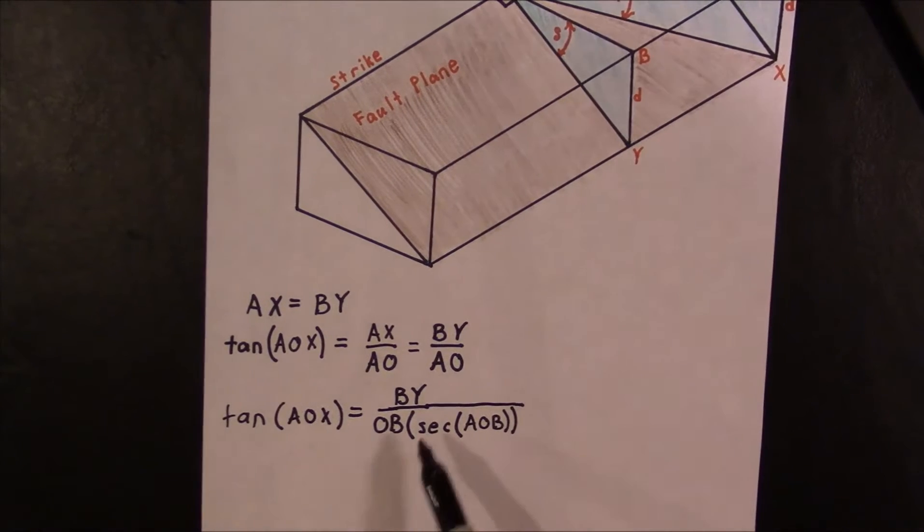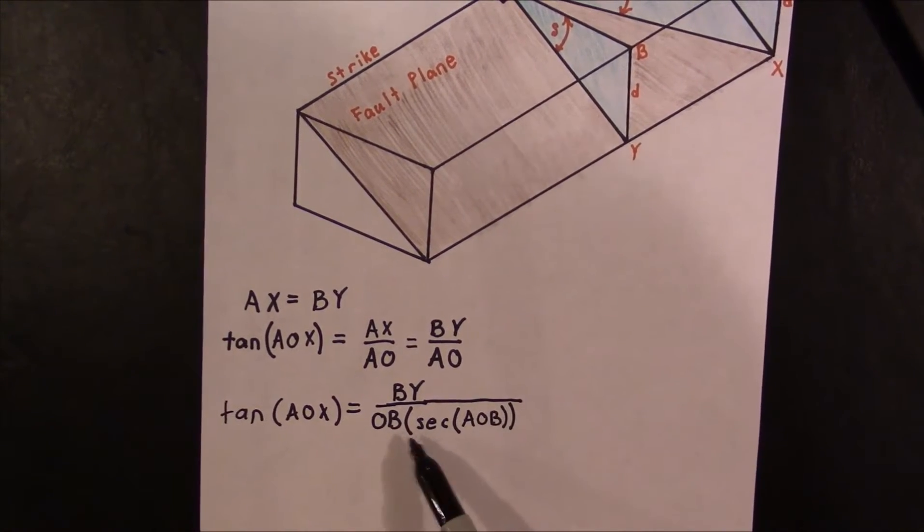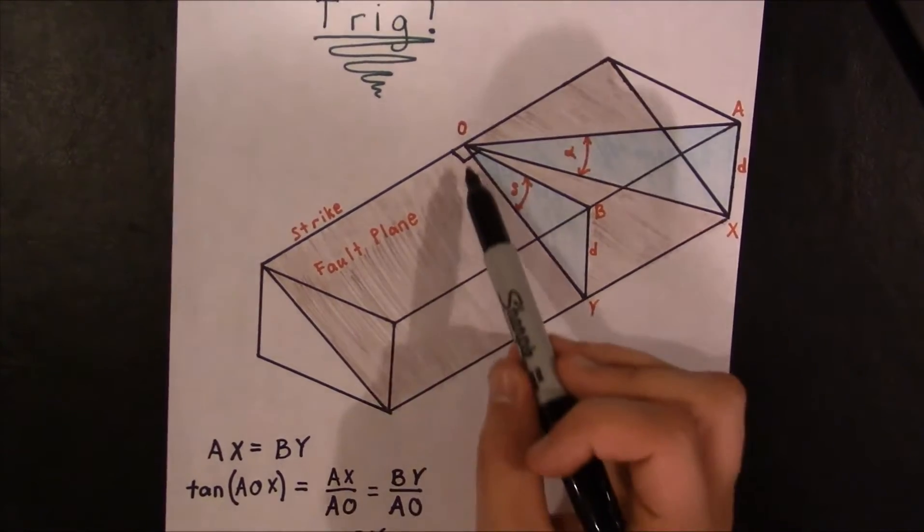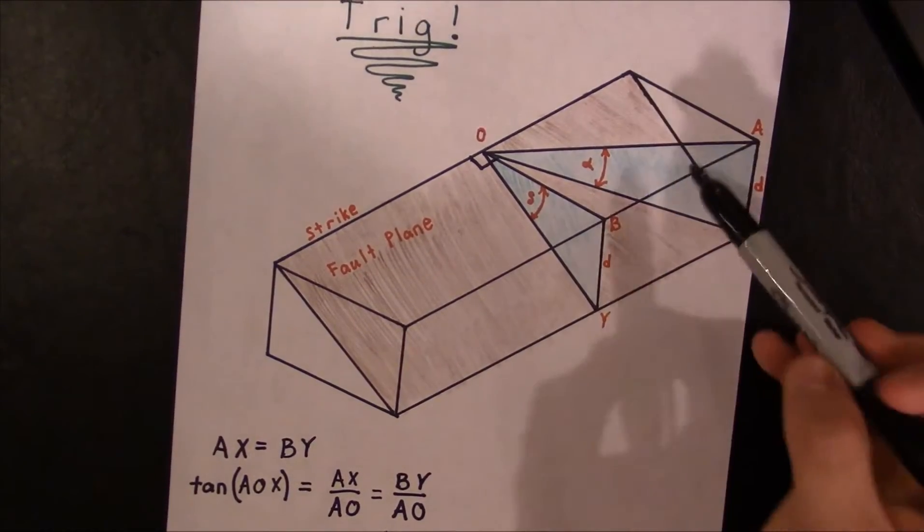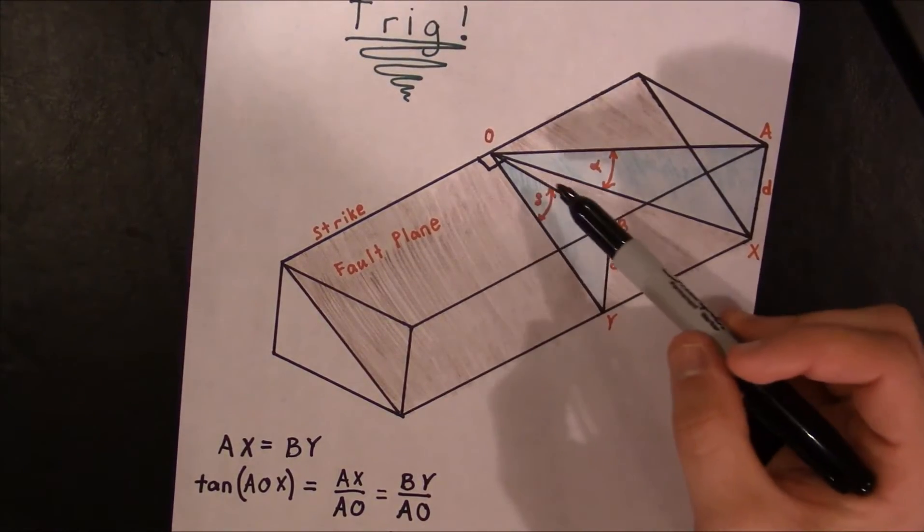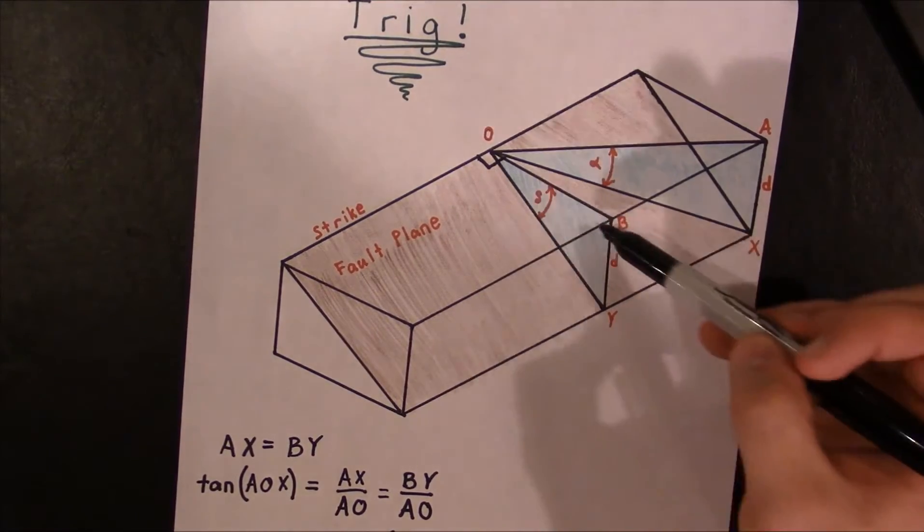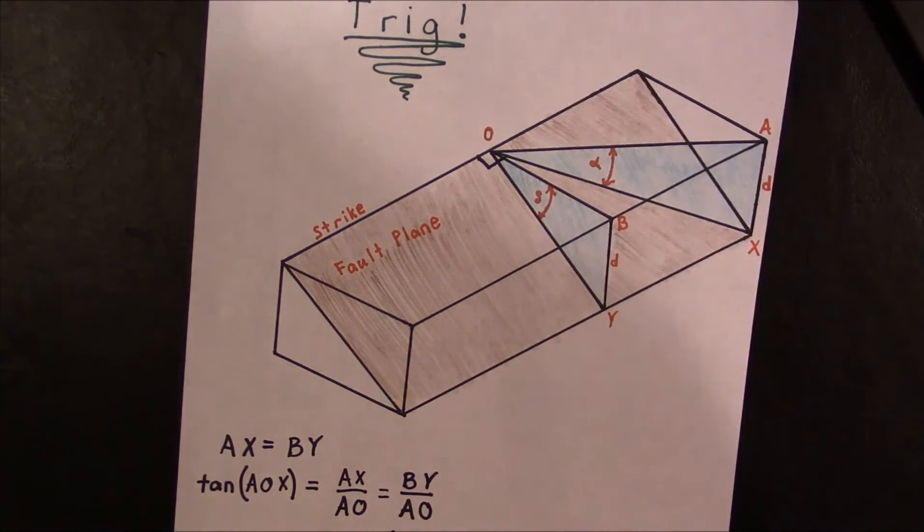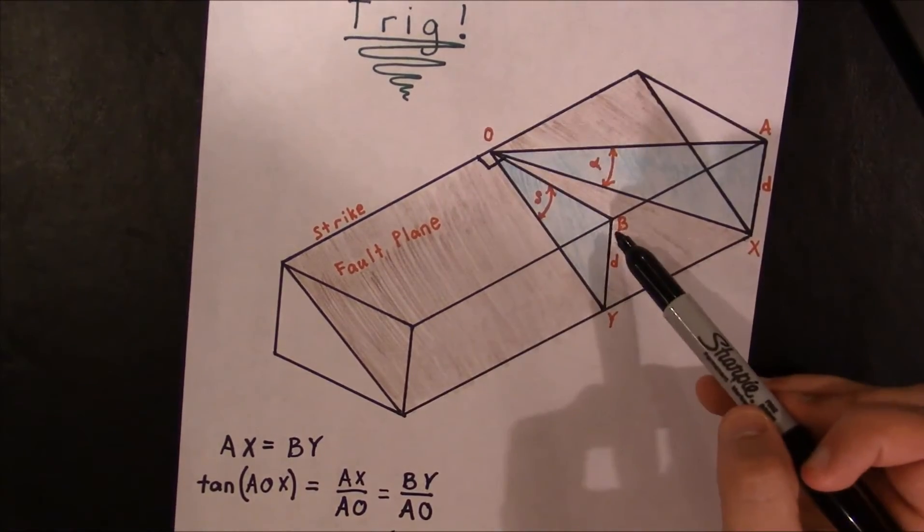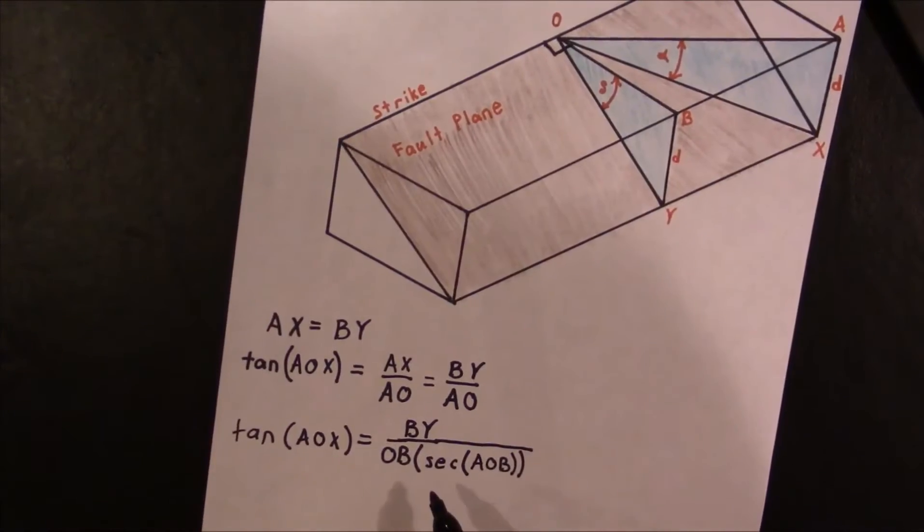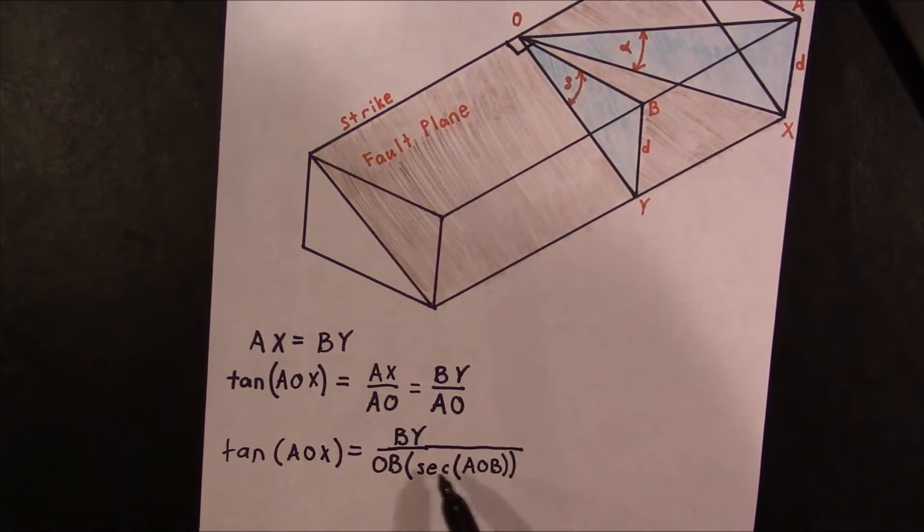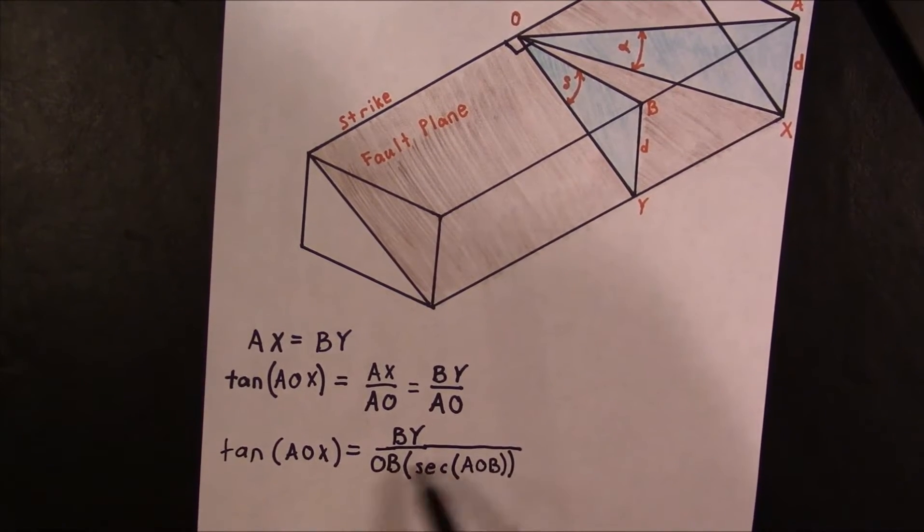So the question is, why does this make sense? OB times the secant of AOB is just going to be AO. And the reason we can reconcile this is because OB is this side, and the secant of AOB is going to be AO over OB. Because remember, the cosine is the adjacent side over the hypotenuse, and the secant is the opposite of that. So it's the hypotenuse over the adjacent, so it's going to be AO over OB. That's what the secant of AOB is. And so if we have AO over OB, the OBs are going to cancel, and we're just going to be left with AO. So that's how we are able to substitute this in.